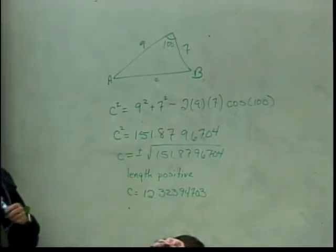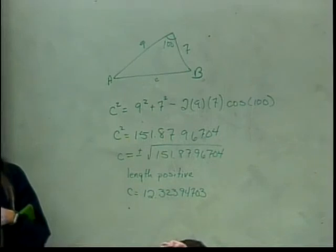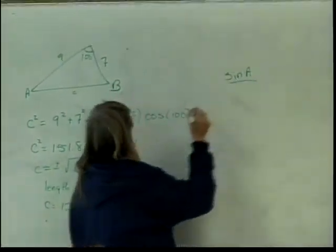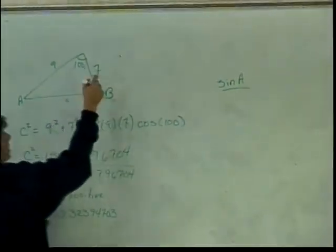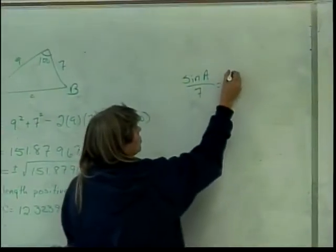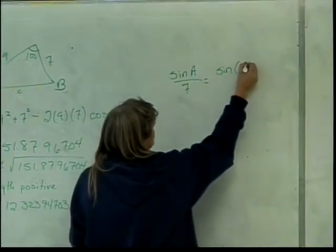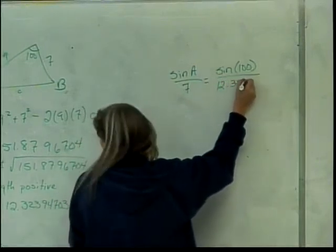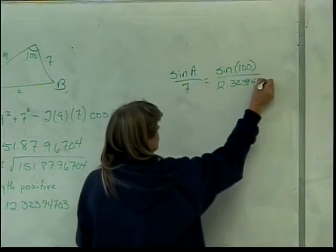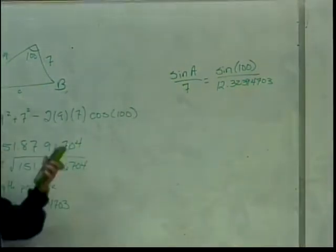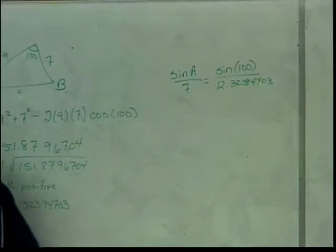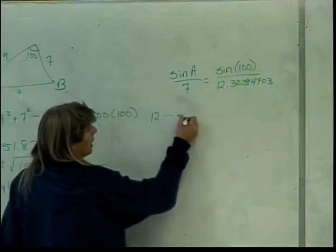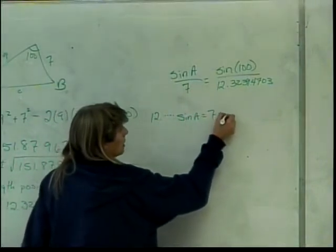All right, now we've got to find the angles. Which one do you want to find first? Just pick one. A, okay. So for our angles, we have sine of A over the side opposite A, which is 7, and that's equal to the sine of 100 over the number that we just found, 12.32394703. So if we just multiply both sides, cross-multiply, 12 point and all this stuff times the sine of A is equal to 7 times the sine of 100.